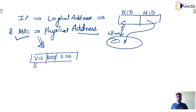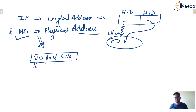That's why IP address is used as a logical address and MAC address is used as a physical address. So that's all about physical addressing. I hope this is clear to everyone. Thank you so much.